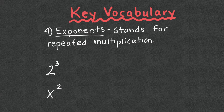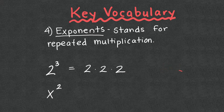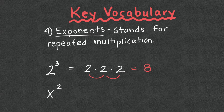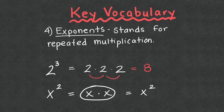Number four, exponents stand for repeated multiplication. Two cubed — or two to the third power — means 2 × 2 × 2, not 2 × 3. Multiplication is repeated addition; exponents are repeated multiplication. So 2³ = 2 × 2 × 2 = 8. With a variable, x² means x × x — it does not mean x times 2.